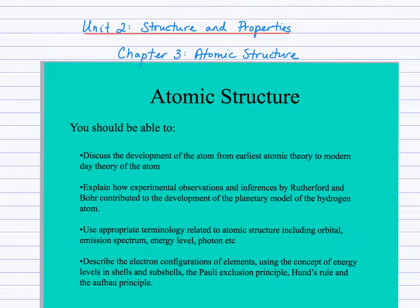Now the next two slides here have a list of the learning goals for this chapter. So when you're looking to summarize what you've learned, you may want to revisit these learning goals. You'll notice in the first learning goal here that you should be able to discuss the development of the atom from earliest atomic theory to modern day theory of the atom. So the earliest atomic theory here, that's Lesson 1, the current video. And then the modern day theory of the atom refers to the quantum model. That'll be covered in Lesson 2.